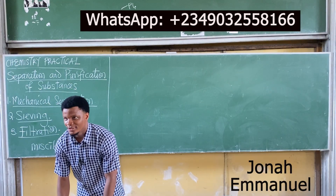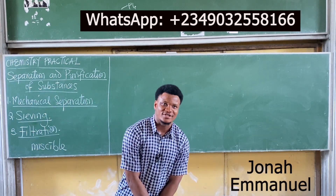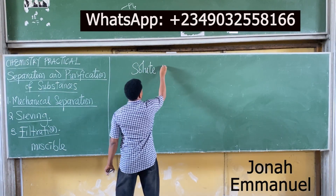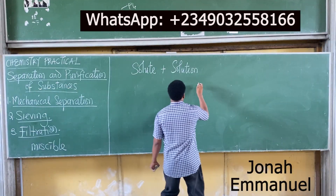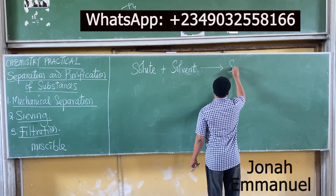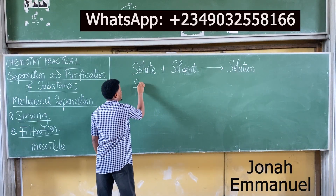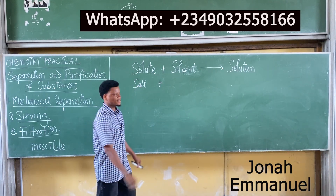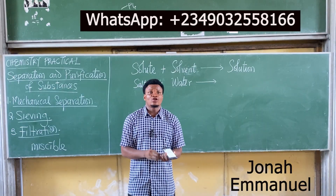So: solute means solid, that's all. If I have a solid plus a solvent, it gives you a solution. A solvent is always a liquid — literally any liquid forms your solvent. So if I have a solute — for example, salt — plus a solvent, let's say water...